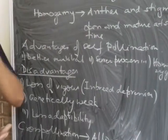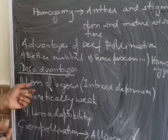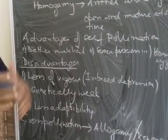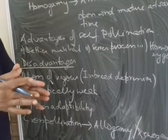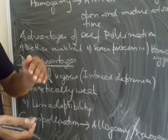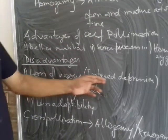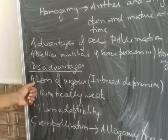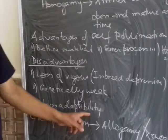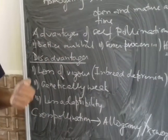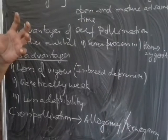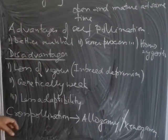Disadvantages of self-pollination include less vigor due to continuous inbreeding, which can lead to inbreeding depression. The same genes are reintroduced and weaker genes cause quality to decrease. Self-pollinated plants are also genetically weak with less adaptability. In contrast, cross-pollinated flowers show hybrid vigor, also called heterosis — hybrids are better than the parent plants.